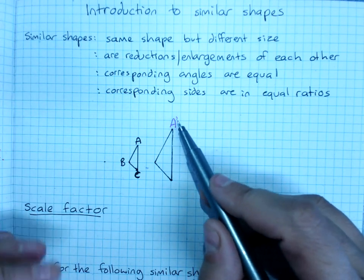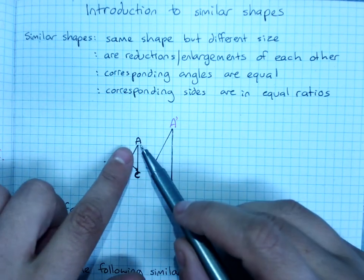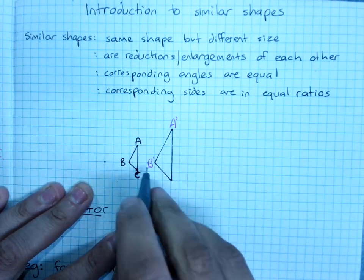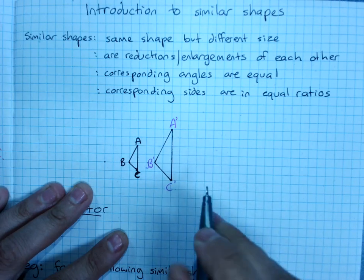And it just means, think of it as new A. This was A, I've now got new A. So this is B prime or new B and C prime, new C.